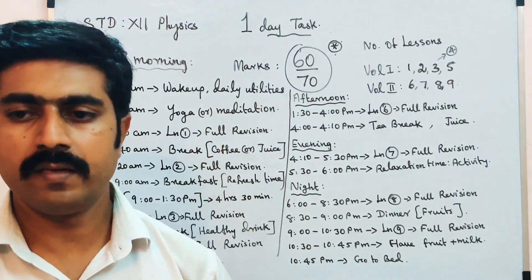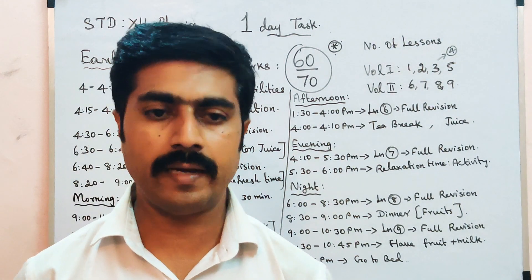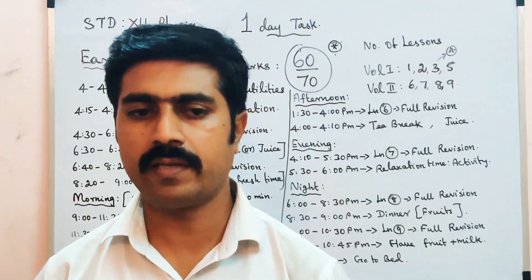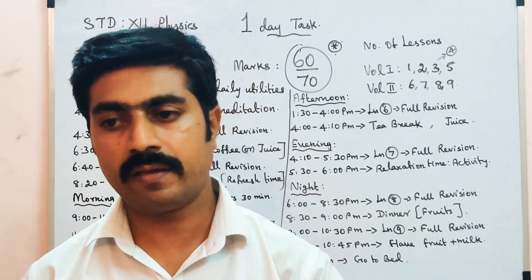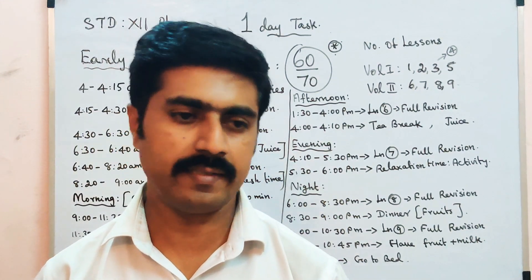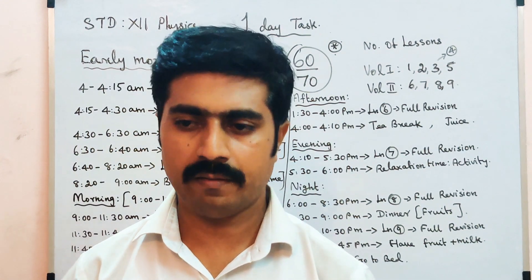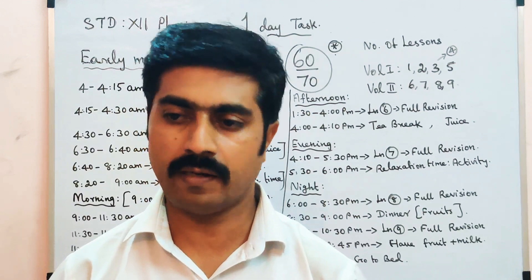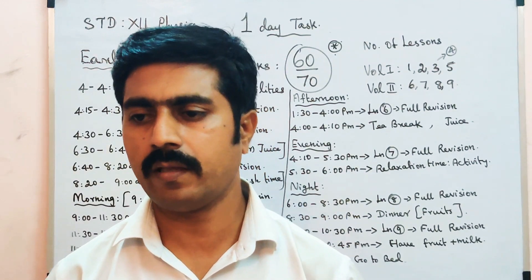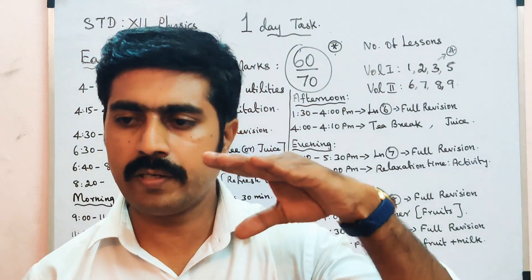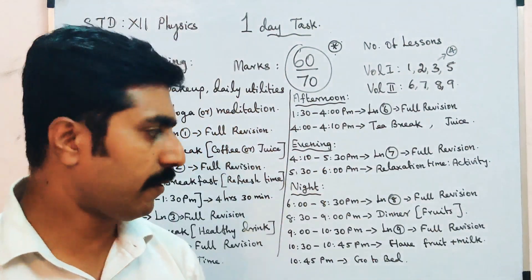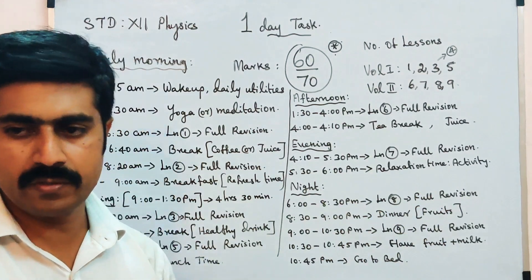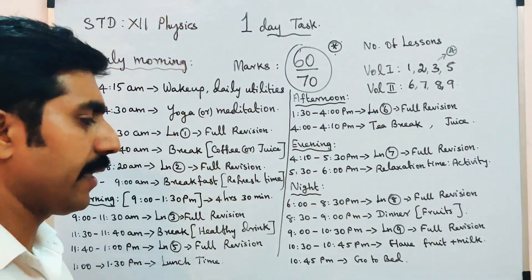Dinner time — 8:30 to 9:00 PM, half an hour. Add fruits to your dinner and eat well. Dinner with fruits.